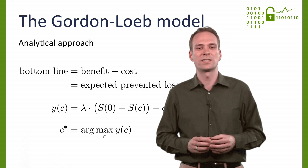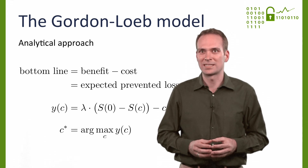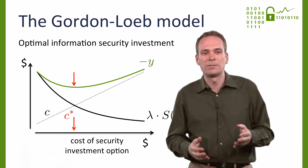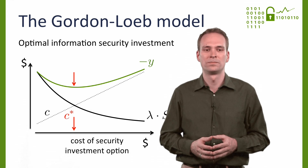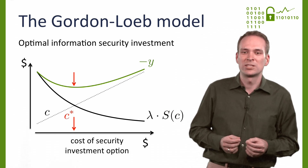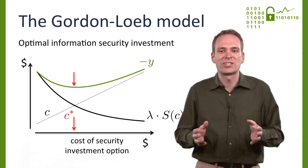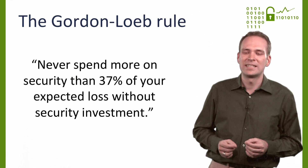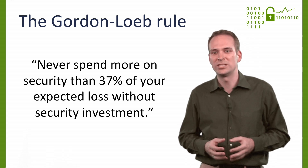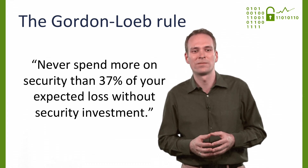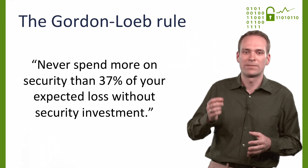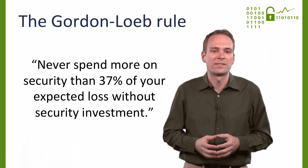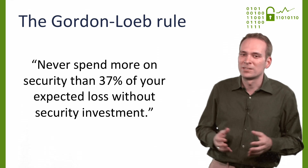C* is the optimal level of information security investment from the organization's perspective. We can find it graphically, as shown here, numerically, or analytically by deriving the first-order condition and solving for C*. More relevant for practitioners is another observation by Gordon and Loeb: they conjecture that for a large class of realistic breach probability functions, the optimal information security level is never higher than 37% of lambda, the fixed loss given breach. This makes a pretty useful rule of thumb to detect likely overspending. If you spend $5 million to protect an asset worth $10 million, you are most likely burning money. Of course, this only gives a loose bound, and the rule doesn't tell us whether $1 million would be enough.